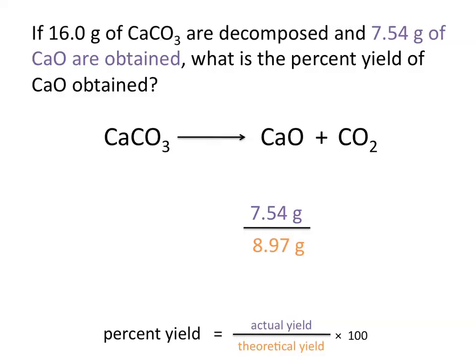Divided by our theoretical yield. And when we multiply this value by 100 to get a percent, we'll see that our percent yield is 84.1%.